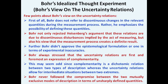Regarding Bohr's view on uncertainty relations: Bohr does not refer to discontinuous changes in quantities during the measurement process; rather, he emphasizes the impossibility of defining both quantities simultaneously. Bohr rejected Heisenberg's argument that uncertainty relations are due to discontinuous disturbances implied by the act of measuring, and also rejected the view that the measurement process creates a definite result. Bohr did not approve the epistemological formulation based on experimental inaccuracies, instead always expecting experimental proof to support mathematical formulations.